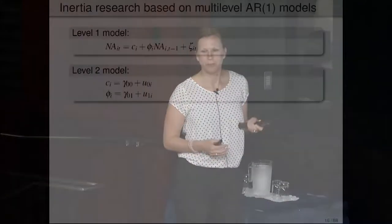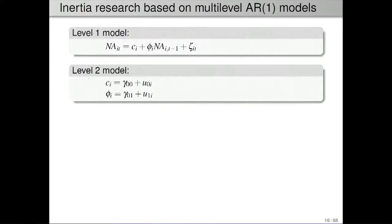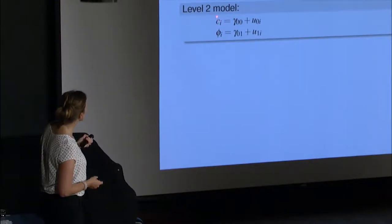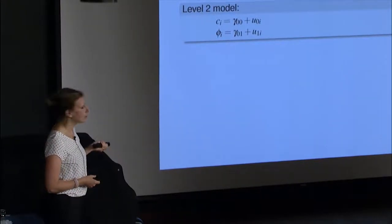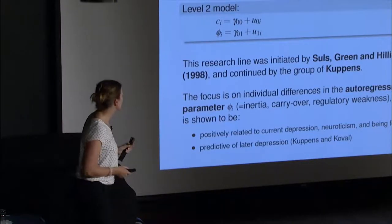For people familiar with multi-level modeling this will be easy, but for those who are not, level one is the lower level, which here is the repeated measures, and level two is the persons — the data are nested, with repeated measures nested in persons. At level two we allow for individual differences in the intercept and individual differences in the autoregression, so the phi parameter, which is the slope in the regression equation.